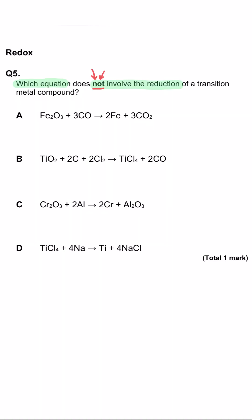Which equation does not involve the reduction of a transition metal compound? So to solve this, we need to work out the oxidation state of the transition metal at the beginning and work it out at the end and see if it has gone down.